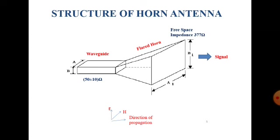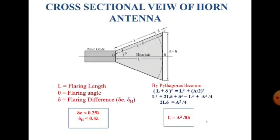To understand the working of a horn antenna in detail, here we have a cross-sectional view. The back-side part of the horn antenna is the waveguide, and one mouth of the waveguide is flared out, which is known as the horn.